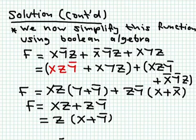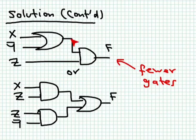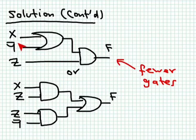We can simplify further by factoring z out, giving z(x OR y̅). There are two possible implementations: one is AND followed by OR, and the other is OR followed by AND. For the OR-followed-by-AND version, x OR y̅ first, then AND with z — this requires only two gates. The AND-OR version using f equals xz plus zy̅ will require more gates. Of course we must account for the cost of an inverter to generate y̅, but still the OR-then-AND implementation requires fewer gates overall.